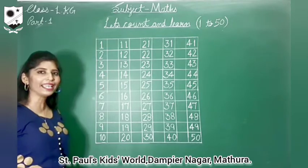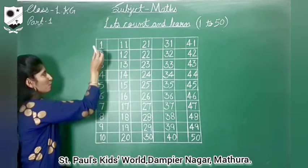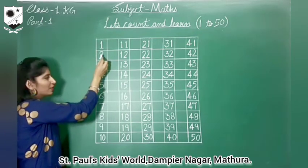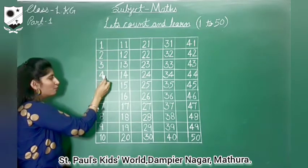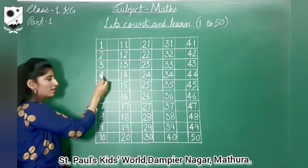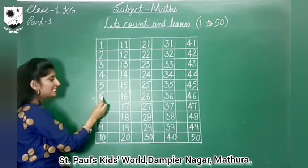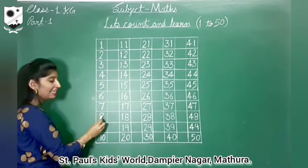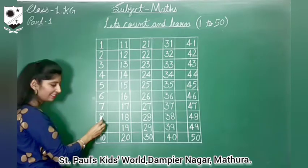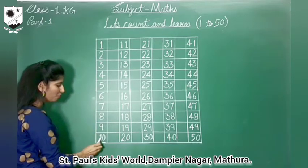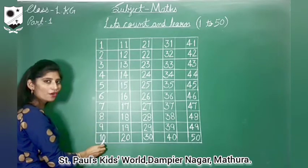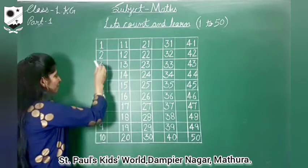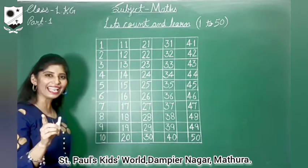Let's count again. 1, 2, 3, 4, 5, 6, 7, 8, 9, 1-0, 10.